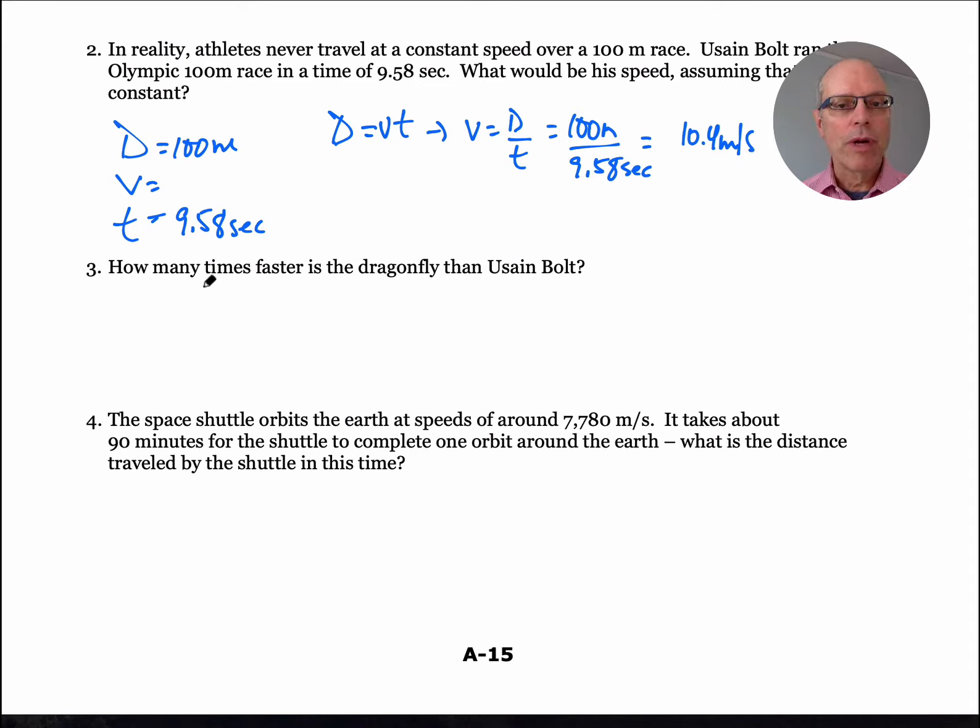How many times faster is the dragonfly than Usain Bolt? This is not an LEPS question. You should know from math class when they ask you something like how many times, that's going to be a division. They want us to form a ratio. When they say the dragonfly as compared to, the dragonfly should go on top. So I'm going to put dragonfly speed on top, 16 meters per second over 10.4 meters per second. It gives us 1.53, so the dragonfly is 53% faster than Usain Bolt.